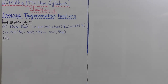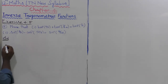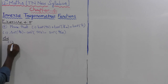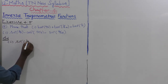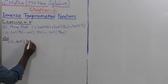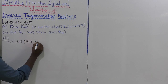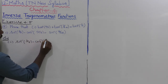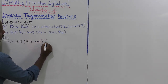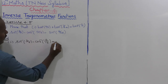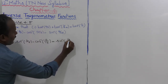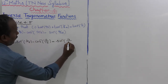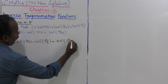X is 4.5, second subdivision, the second one: sin inverse of 3 by 5 minus cos inverse of 12 divided by 13 is equal to sin inverse of 16 divided by 65. That's all.